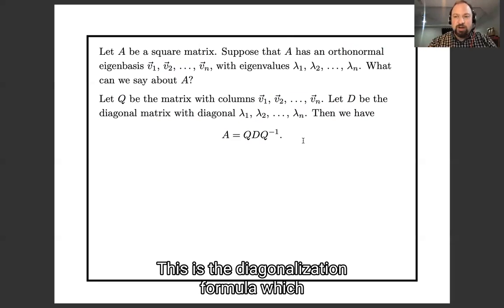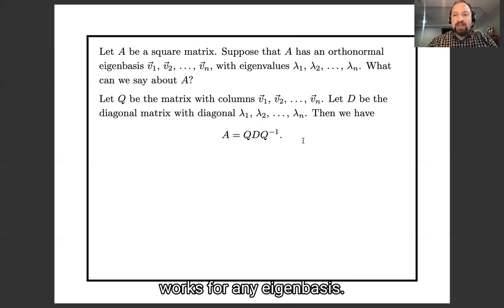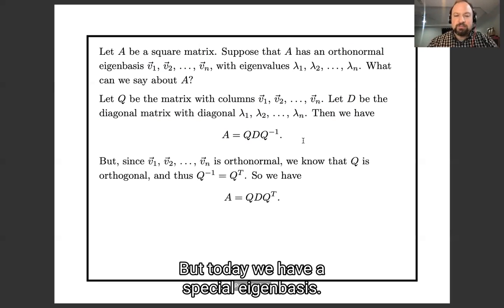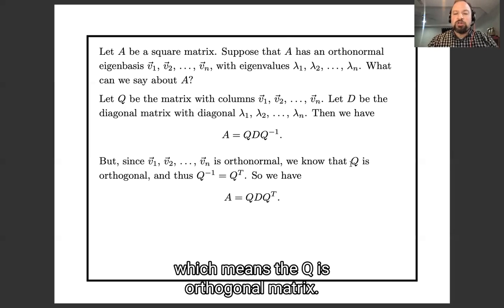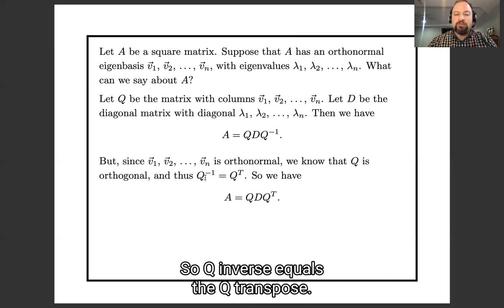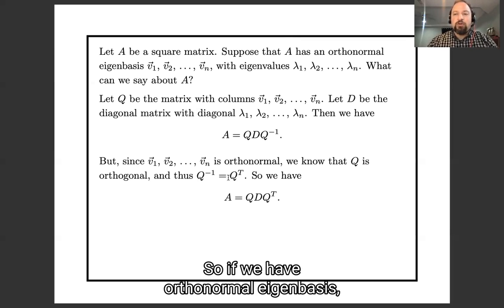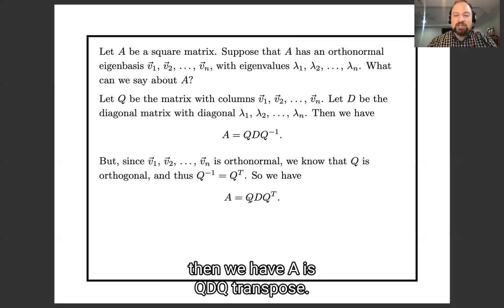Today we have a special eigenbasis — an orthonormal eigenbasis — which means that Q is an orthogonal matrix, so Q inverse is the same thing as Q transpose. So if we have an orthonormal eigenbasis, then we have A equals Q D Q transpose.